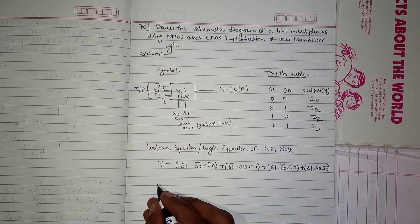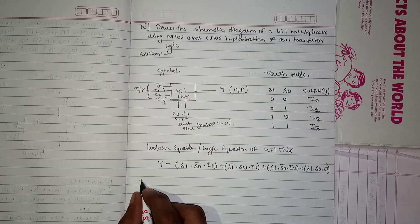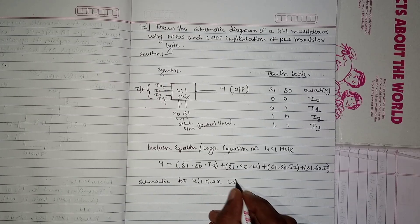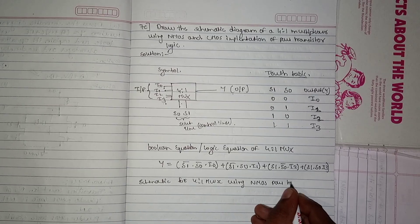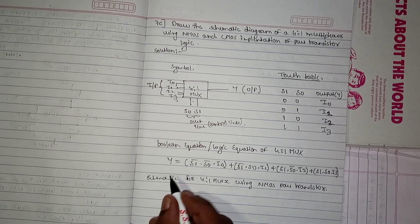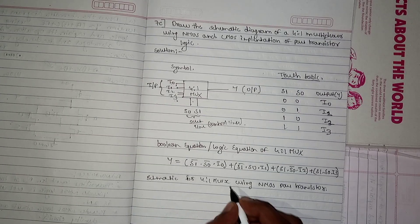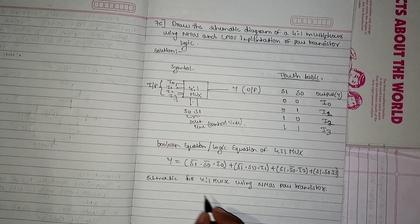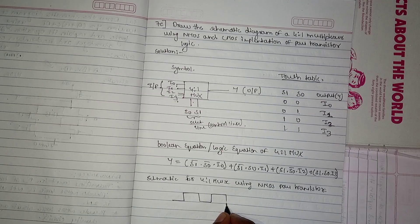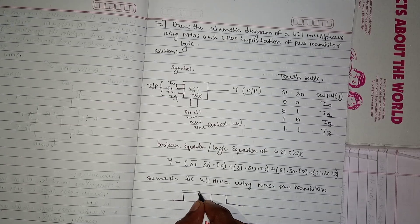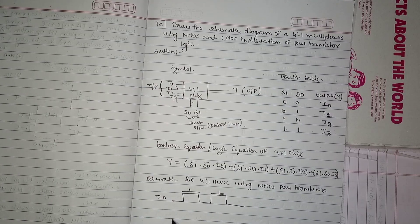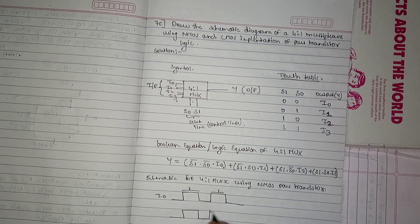Now the schematic for the 4-to-1 MUX using NMOS pass transistors. Please watch carefully — do not skip, otherwise you will not be able to understand. I will draw it here. This is the NMOS transistor; first I will draw all four NMOS transistors.